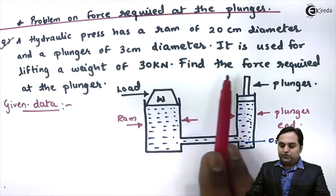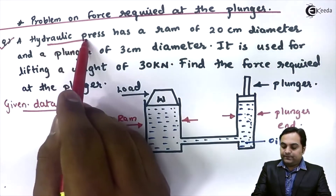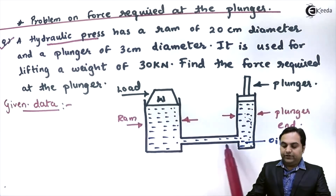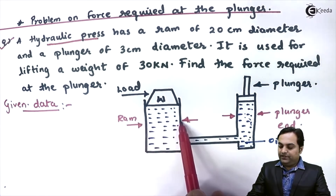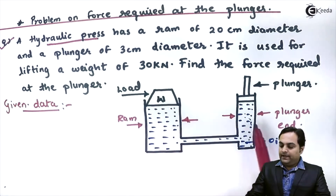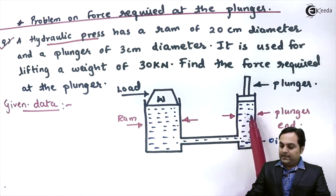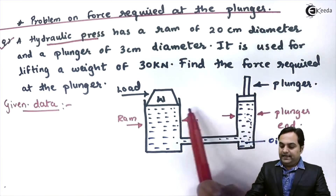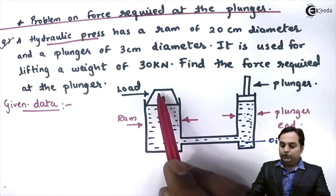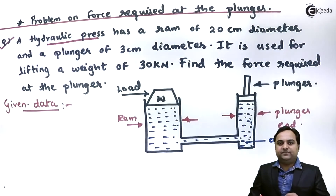For this question, since it is a hydraulic press, I have drawn the diagram of hydraulic press. It consists of a ram, which is the bigger diameter end, and a plunger end, which is the smaller diameter end. At the plunger we apply the force and at the ram end the load is lifted.